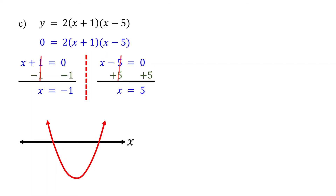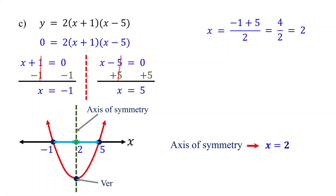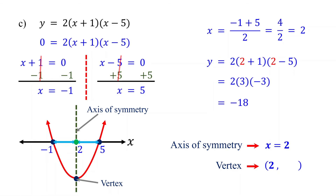The axis of symmetry always divides the parabola into two equal halves, so it is located exactly in the middle of the x-intercepts. To find it, simply add the x-intercepts and divide by 2 — the same as finding their average. This simplifies to 2. Therefore, the axis of symmetry is the vertical line x equals 2. The vertex lies on the axis of symmetry, so its x-coordinate is 2. Find the y-coordinate by substituting 2 for x into the original function. This simplifies to negative 18. Therefore, the vertex is the point 2 comma negative 18.